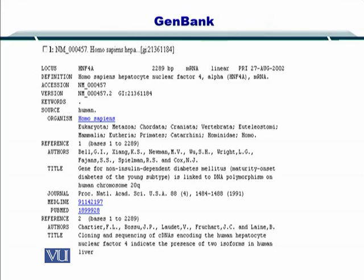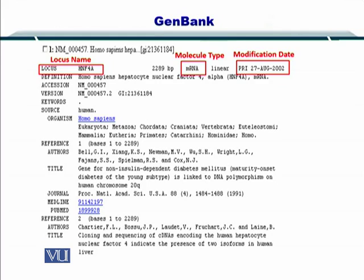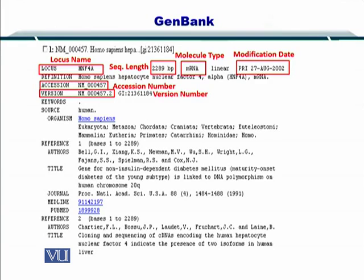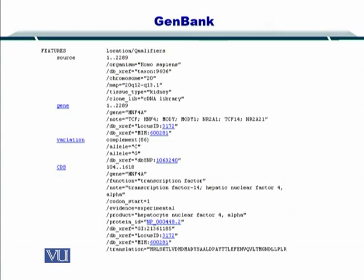You get the output from GeneBank like this. The first information is the locus. Next, you get the modification date or the last update date, the molecule type — such as messenger RNA in this case — the accession number, the number of nucleotides in the sequence, and the version number for this sequence. If you scroll down this page, you will find further information such as the gene, the variation, and the CDS. At the bottom, you can also look at the protein that is translated from this sequence.